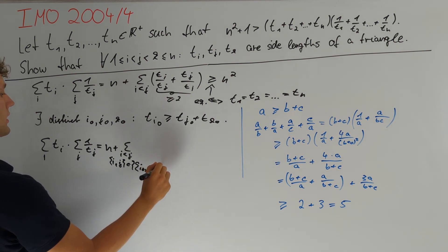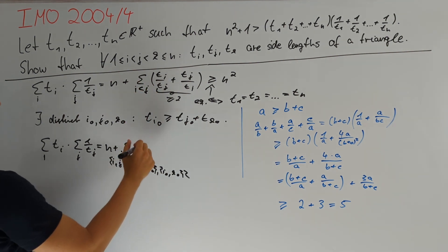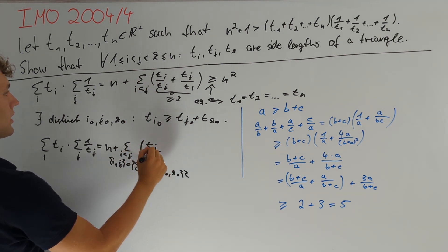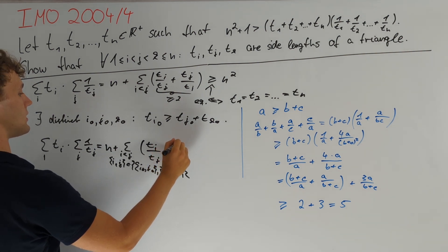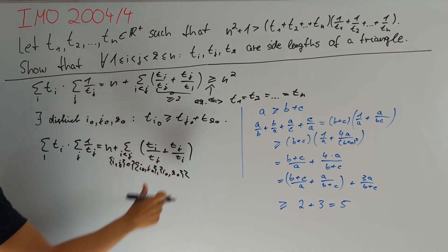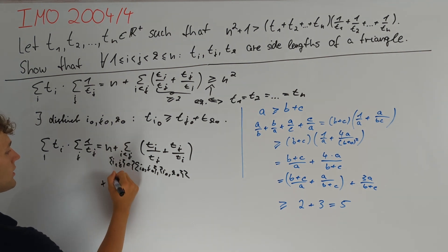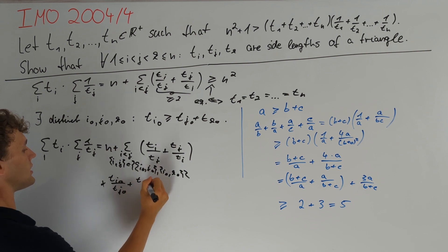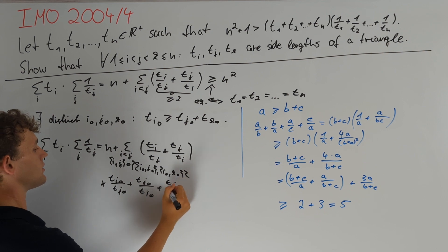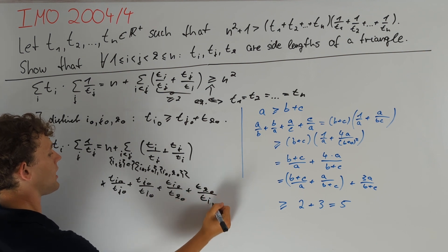Then we sum again over tᵢ/tⱼ + tⱼ/tᵢ. We left out two summands that correspond to exactly a sum of four terms. Namely, tᵢ₀/tⱼ₀ + tⱼ₀/tᵢ₀ + tᵢ₀/tₖ₀ + tₖ₀/tᵢ₀.